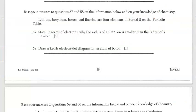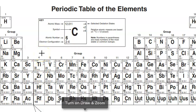Moving on to questions 57 and 58. We have information about lithium, beryllium, boron, and fluorine. They're all part of period two. In question 57, state in terms of electrons, why the radius of beryllium 2 plus ion is smaller than the radius of a beryllium atom. Let's go to the periodic table. Beryllium as an atom is atomic number four. That means four protons and four electrons. If it's a beryllium 2 plus ion, it's lost two electrons. And as a result of losing electrons, it is smaller. That's your answer.